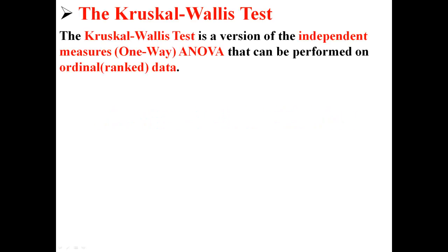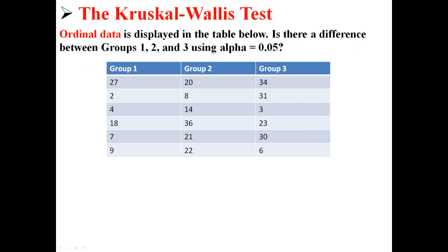In this lecture, we're going to perform a Kruskal-Wallis test. The Kruskal-Wallis test is a version of the independent measures, or one-way ANOVA, that can be performed on ordinal, or ranked, data. Ordinal data is displayed in the table below. Here we have three groups with six scores for each group. Is there a difference between groups 1, 2, and 3 using an alpha level of 0.05? We're going to perform a Kruskal-Wallis test on this data set to see if there's a difference between the three groups.